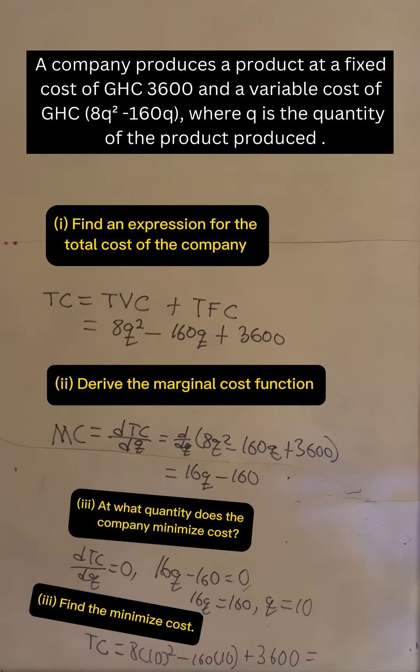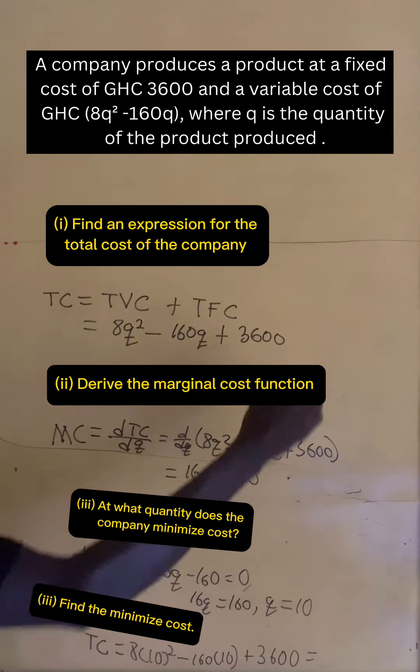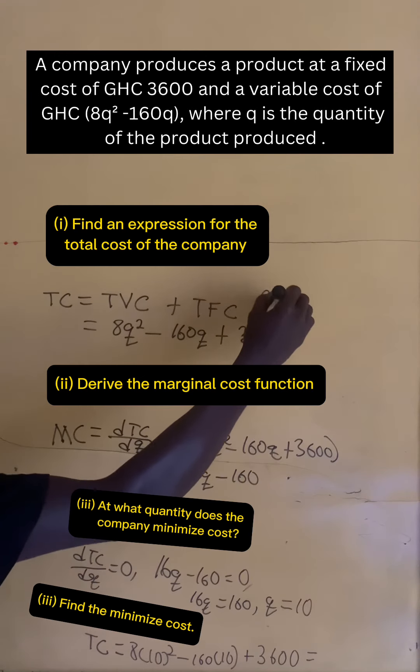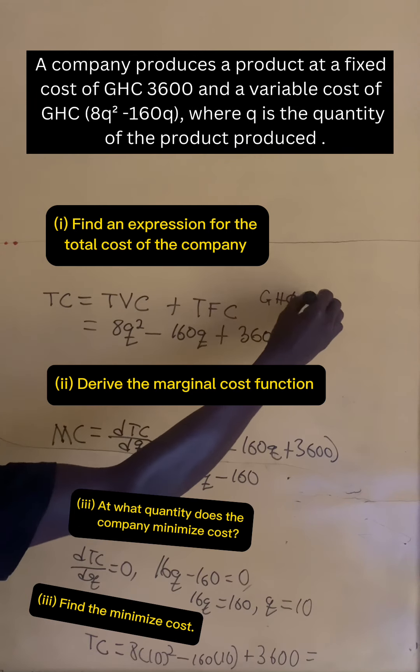We are almost done. Take your calculator, put in the values, and we simply get 2,800 Ghana cedis.